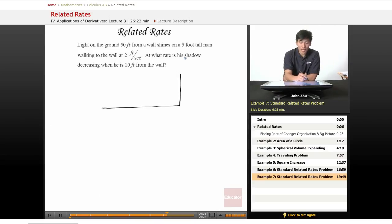Light on the ground, 50 feet from a wall. So here's the light, 50 feet from the wall. It shines on a five foot tall man. So here's our five foot tall man. It shines his shadow onto the wall.